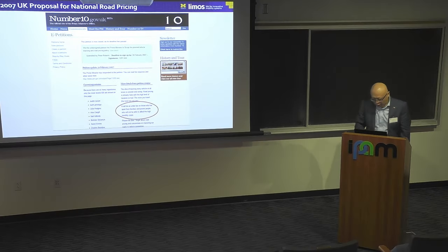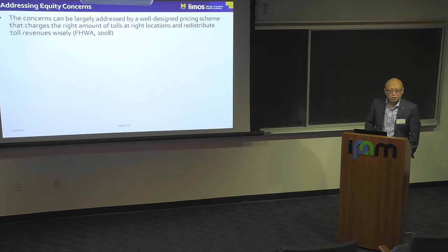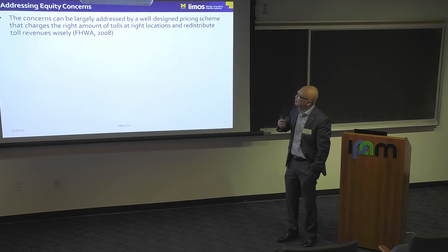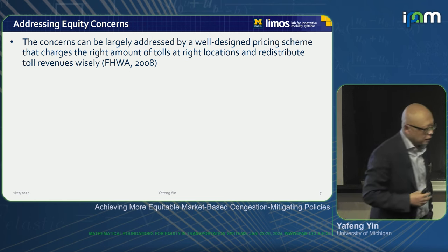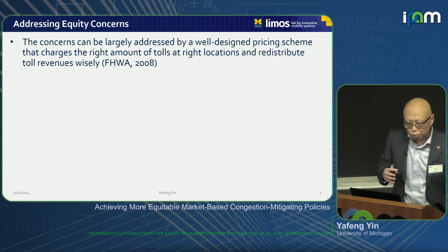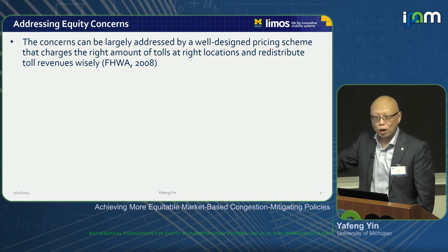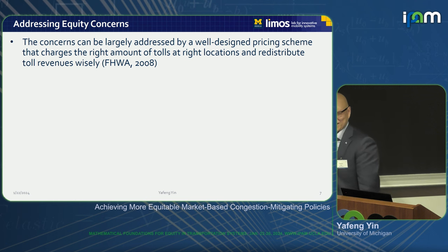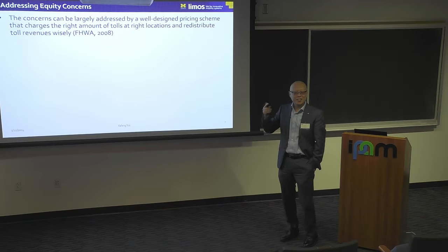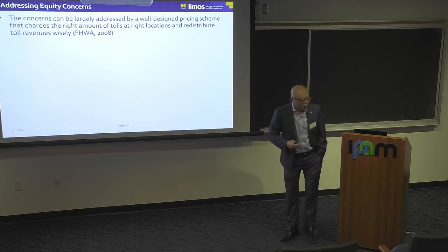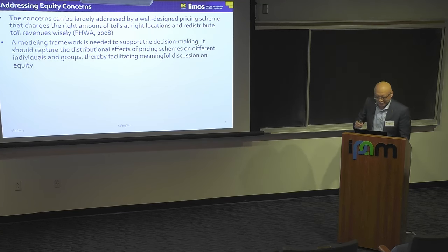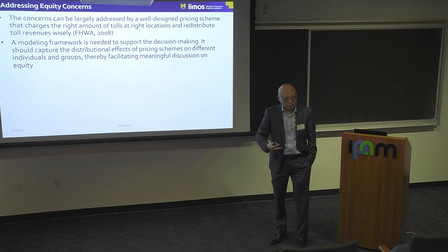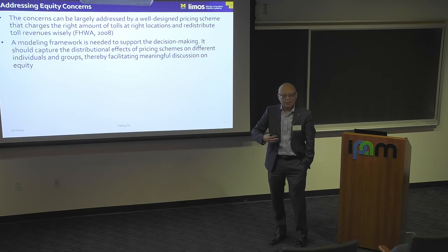A lot of those equity concerns are legitimate and reasonable, and the problem is how we address them. A 2008 report by the Federal Highway Administration says the equity concern can be largely addressed by a well-designed pricing scheme that charges the right amount of toll at the right locations and redistributes the toll revenue wisely. That is certainly easier said than done, and what we need is a modeling framework to know what's the right price at the right location and how to use that revenue wisely.